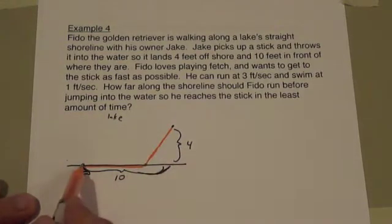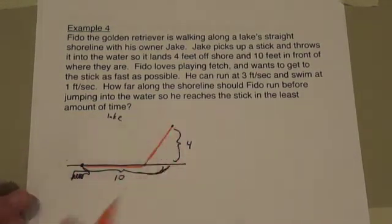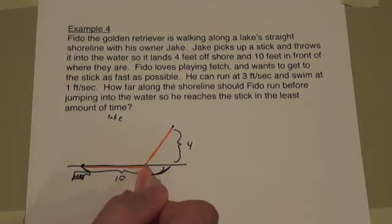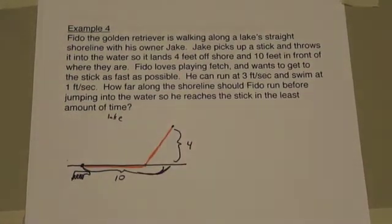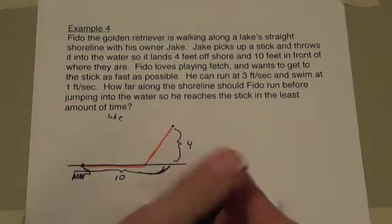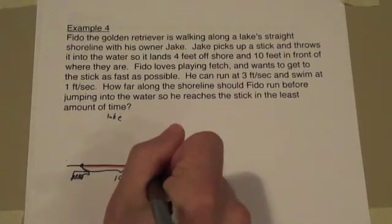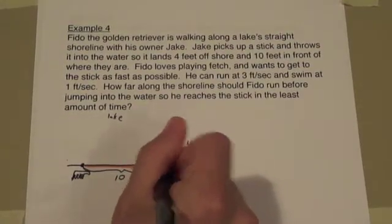On the other hand, running all the way to this point, ten feet, and then swimming straight is not a very short path. That's a long path. He'd be running ten plus four is fourteen feet. So he's going to go somewhere in the middle, run most of the way and then swim the rest. The question is how far along the shoreline should he run before jumping into the water? We have to label some kind of variable so let's label this distance right here x.